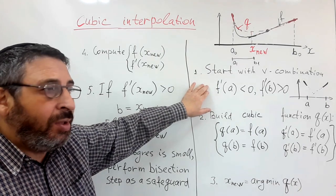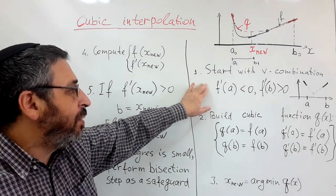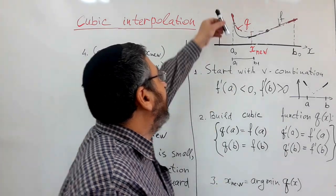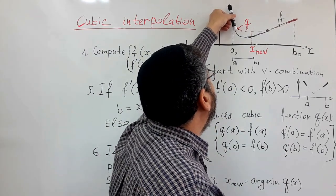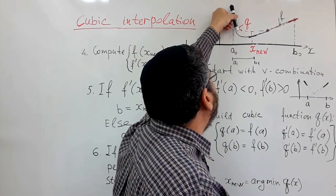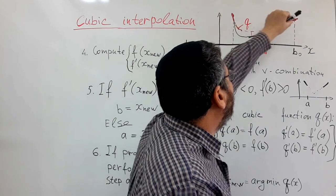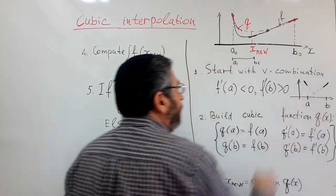But before, as in the quadratic case, similarly to quadratic case, we will start with so-called v-combination. We check whether slopes of the function look in direction of each other, like in this picture.